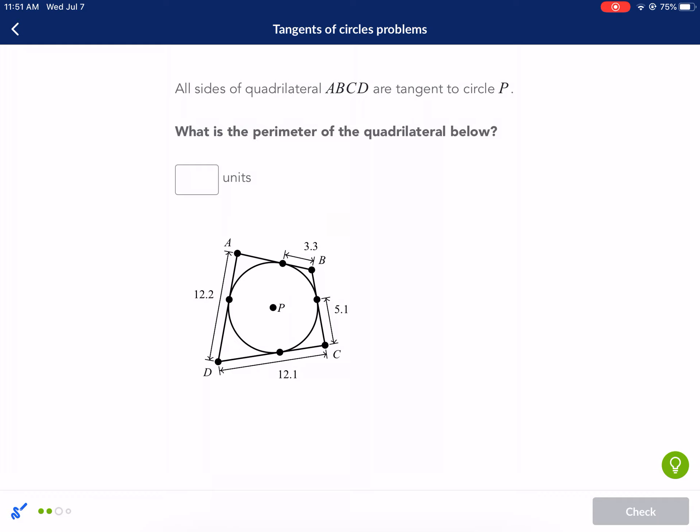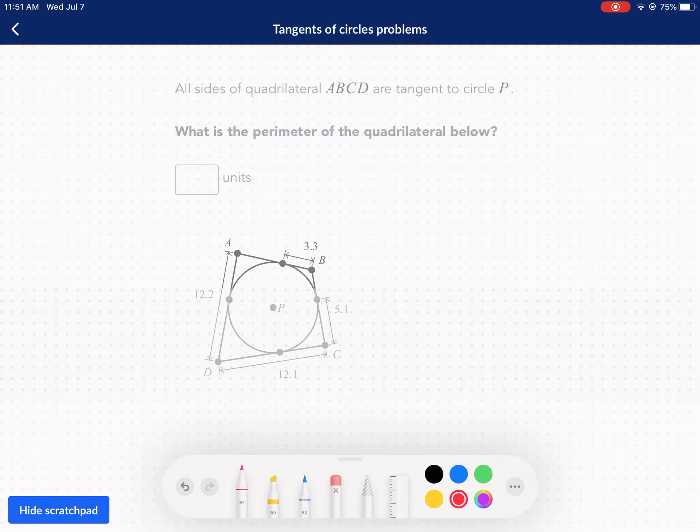All sides of quadrilateral ABCD are tangent to circle P. What is the perimeter of the quadrilateral below? Okay. So we have all these tangent lines being drawn here. We have 3.3. We have 12.2. And we have a really interesting quadrilateral in place here. So how are we going to go about doing this? Well, we know a couple of things. We could draw some tangent lines to the radius. So we know that these angles are all 90 degrees. We know that this is 90, that this is 90, that this is 90, and that this is 90.